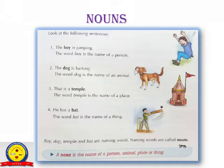So here 'boy', 'dog', 'temple', and 'bat' are naming words. Naming words are called nouns. A noun is the name of a person, animal, place, or thing.